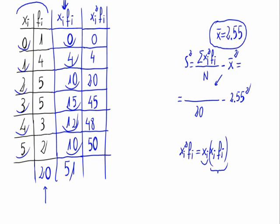That's our numerator. So the variance is doing this operation, 467 divided by 20 minus 2.55 squared, that is 1.8475.